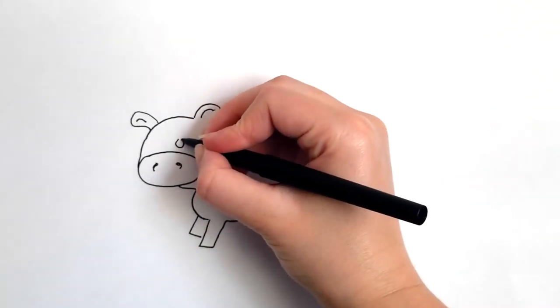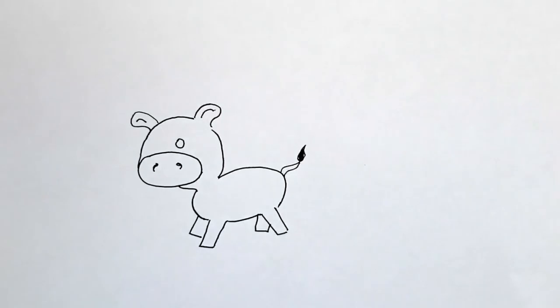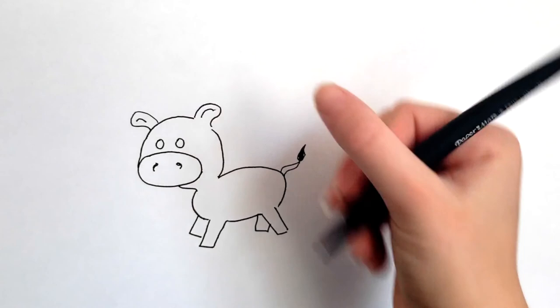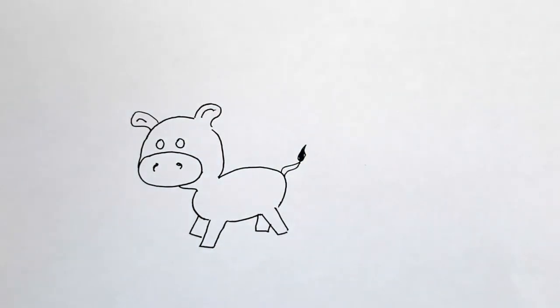So I'm gonna add the eyes. Really here I'm just gonna draw two little ovals, and then I'm gonna draw two circles inside of the ovals.